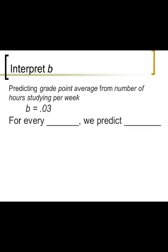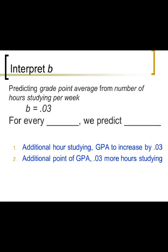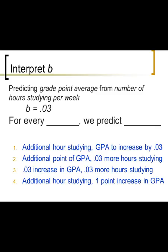Let's practice. Predicting grade point average from number of hours studying per week. B is 0.03. Here are your four choices. I'm going to pause for a couple seconds, then I'll give you the answer. The correct answer is: for every additional hour studying, we predict GPA to increase by 0.03.